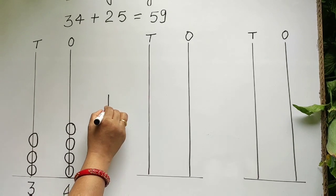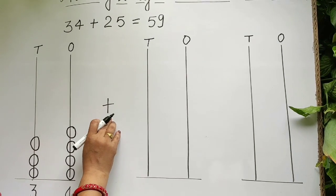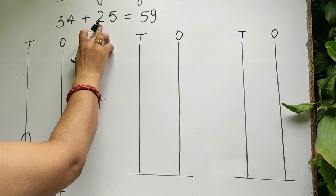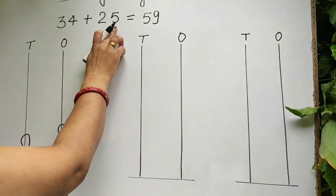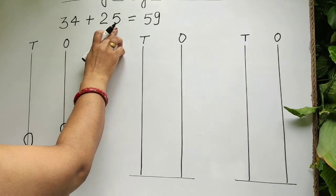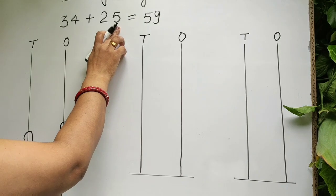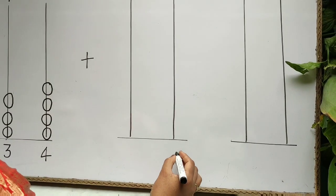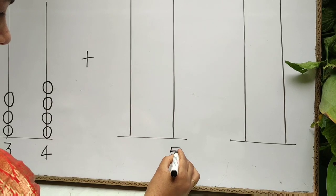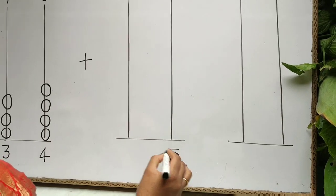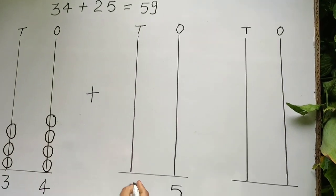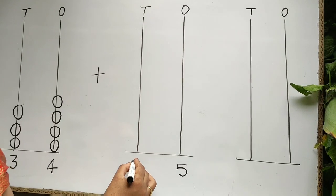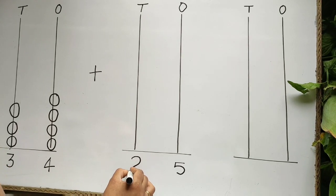Next, put here a plus sign. Two tens, five ones is equal to 25. So we will write under ones 5 and we will write 2 under tens.